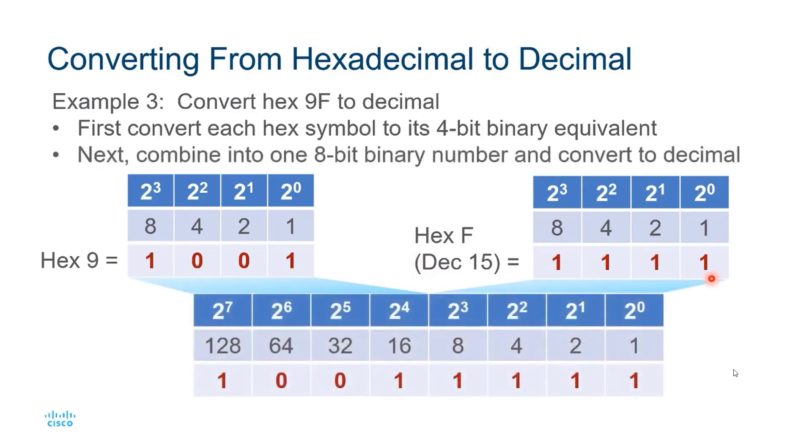Next, I'll combine them into one 8-bit binary number. So here I have the first 8 place values in binary, and then I'll convert to decimal, and that gives me 128 plus 16 plus 8 plus 4 plus 2 plus 1, or 159 in decimal.